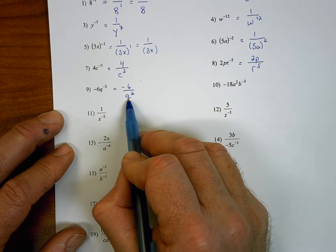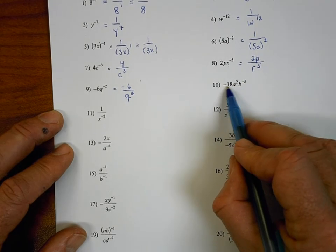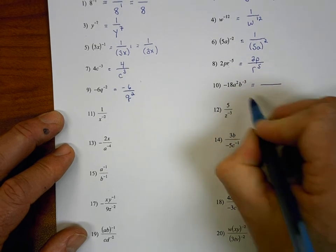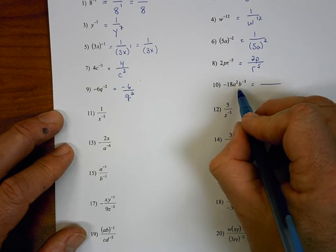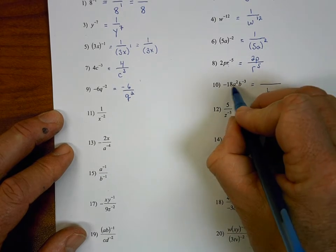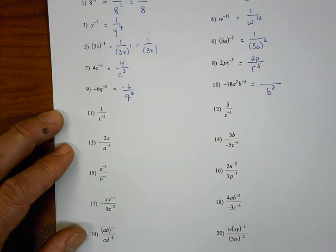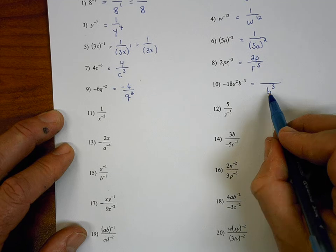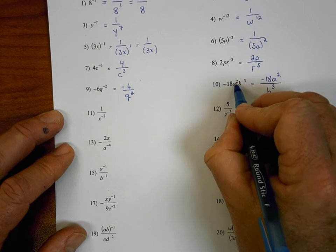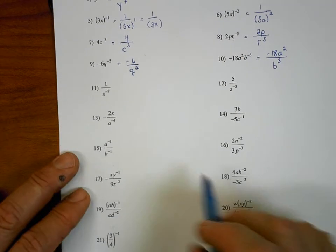Number 10: we have a positive two power for the a and a coefficient of negative 18. When we simplify, the only part that moves to the denominator is the b, because b is the only variable associated with the negative three power. So b to the positive three goes on the denominator, and the negative 18 and the a squared stay on the numerator. The simplified answer is negative 18 a squared over b to the third.